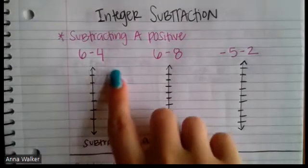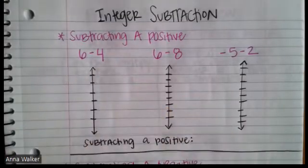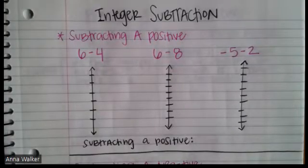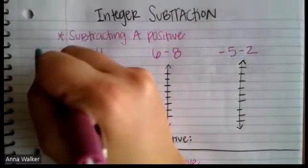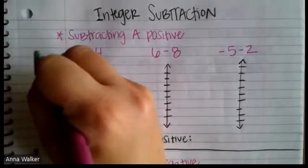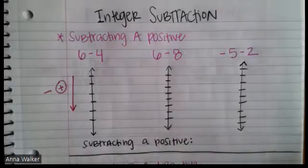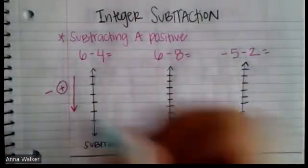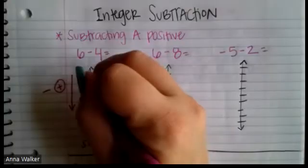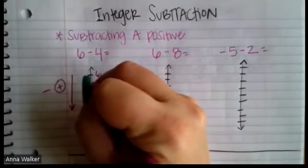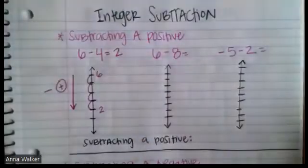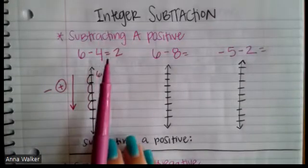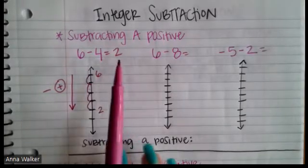The first situation is one most of us are familiar with: the problem six minus four. To model what subtraction looks like, we use a vertical number line. When we subtract a positive number, we always end up at a smaller value, so we go down the number line. Starting at six and subtracting four, we go down four spots — one, two, three, four — and end up at positive two. Six minus four is positive two.